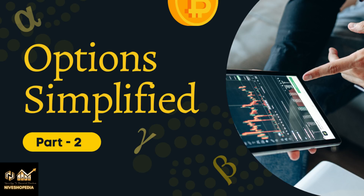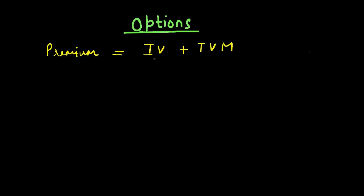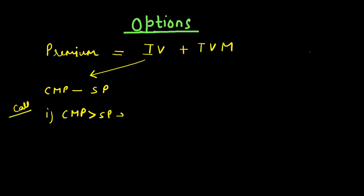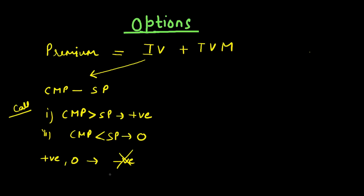Hello friends, welcome to the second episode of the Options Simplified series. From the first session we know that premium is equal to intrinsic value plus time value of money. Intrinsic value is the difference between current market price and the strike price. For a call option, if the current market price is greater than the strike price, intrinsic value is positive; if lower, it is zero. So intrinsic value is either positive or zero — it can never be negative.